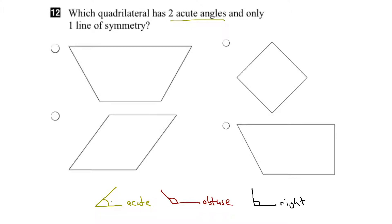Let's look at all the shapes, starting with this one. This angle and this angle would be acute angles because they are less than 90 degrees, whereas these other angles are greater than 90 but less than 180, so they are obtuse angles. So this quadrilateral does have 2 acute angles, so it is a possibility.